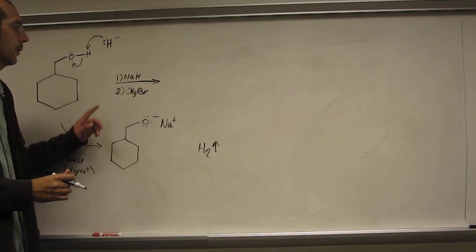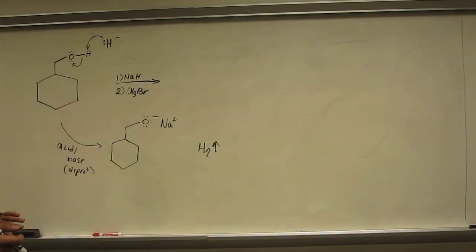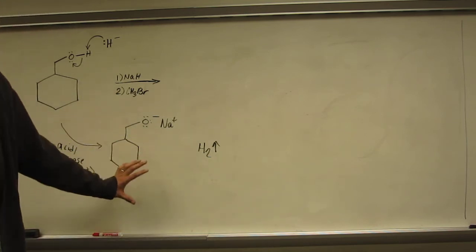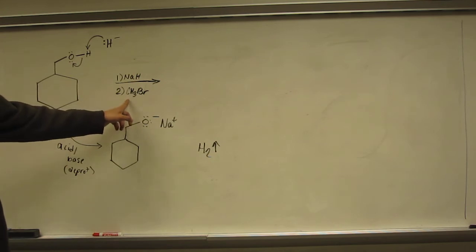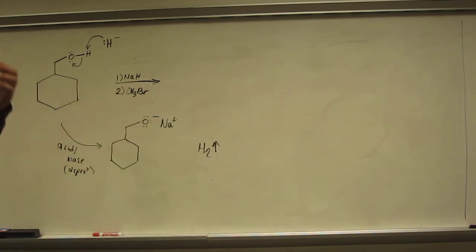This is actually what we call a two-step, one-pot reaction, because you don't ever isolate this intermediate. You just leave that in the reaction flask, and then add your alkyl halide to it.